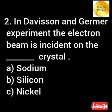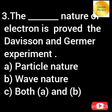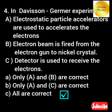In the Davisson and Germer experiment, the electron beam is incident on the crystal of... What nature of electron is proved in the Davisson and Germer experiment? The points included in the construction of the Davisson and Germer experiment is...